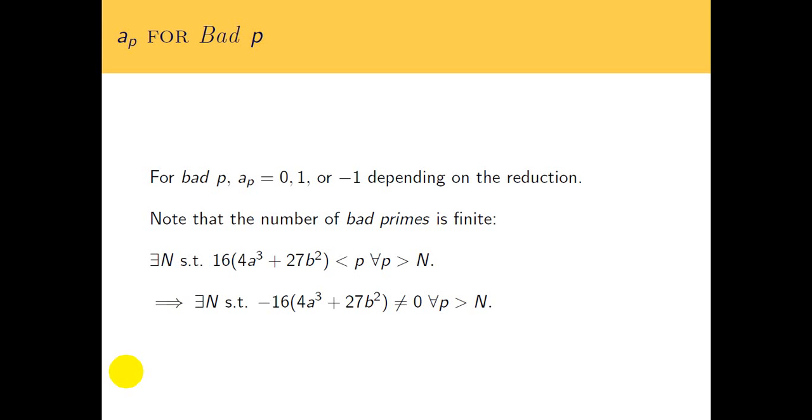We notice that the number of bad primes is finite. This is very useful to us. Why is the number of bad primes finite? The prime is bad if p divides this discriminant, because that discriminant will reduce to zero mod p. That's the same thing as saying that p will divide the discriminant. Well, if you go out far enough, there's no way that p is going to divide this discriminant. So eventually, all the discriminants will be non-zero. If you're talking about reducing the elliptic curve mod p, eventually you're not going to have a problem with bad p's.